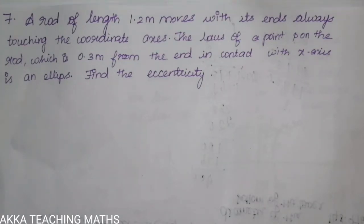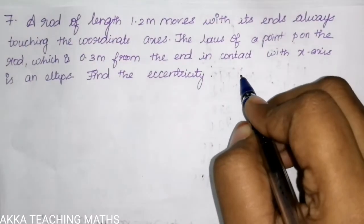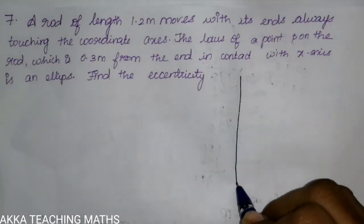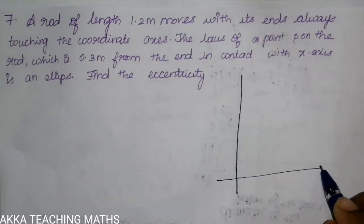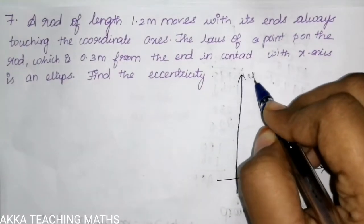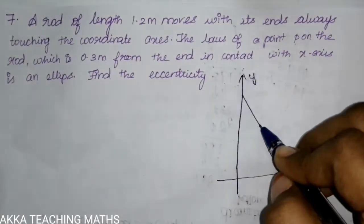Find the eccentricity. So as usual, we draw the x-axis and y-axis. One rod is placed touching both coordinate axes.